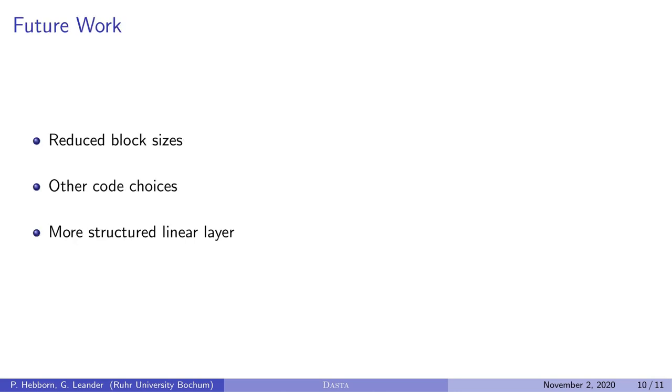We see a couple of further research directions. The block sizes in RASTA are chosen very conservatively, and we just took the same ones for DASTA. But maybe they can be reduced by taking our improved security analysis into account. And for the linear layer, we used BCH codes, which we found most straightforward. But other code choices could also be interesting. And finally, a more structured linear layer could be considered, which could lead to better security arguments and also to performance improvements.